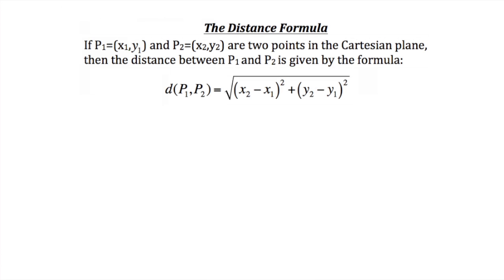The next important concept covered in this tutorial is the distance formula. If p1 equals (x1, y1), and p2 equals (x2, y2), and there are two points in the Cartesian plane, then the distance between p1 and p2 is given by the following formula: the square root of (x2 minus x1) squared plus (y2 minus y1) squared. You take the square root of that, and that gives you the distance between the two points.